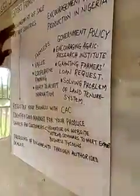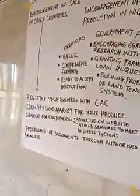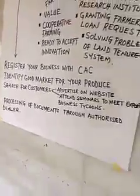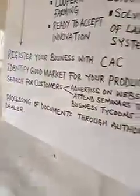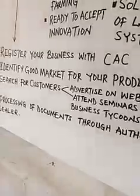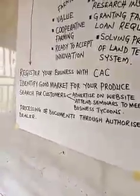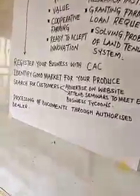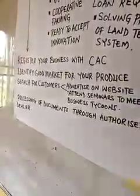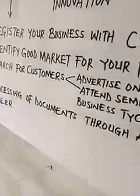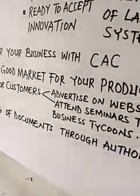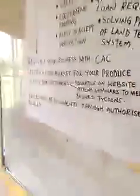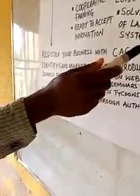Now let's look at the encouragement of sales in other countries. How do we encourage sales of agricultural produce abroad from Nigeria? The first thing to do if you want to export your agricultural produce is to register your business with CAC, which is the Corporate Affairs Commission. Registering with CAC gives you an address in Nigeria, which builds confidence with prospective foreign customers who want to know where you are located and can verify your business.